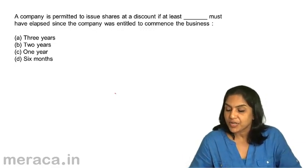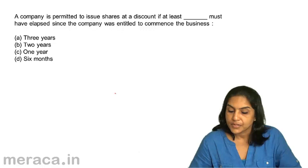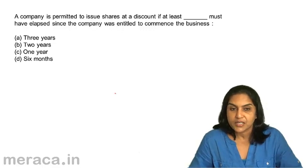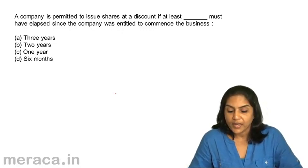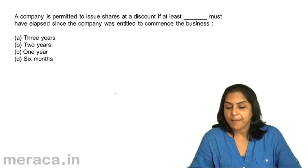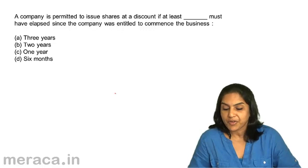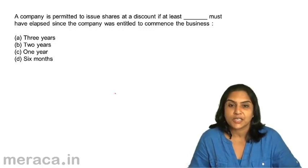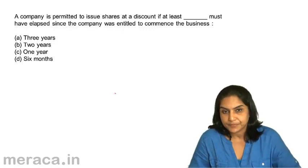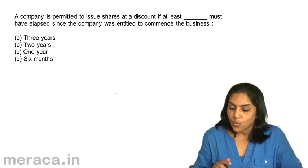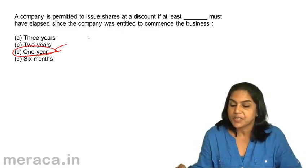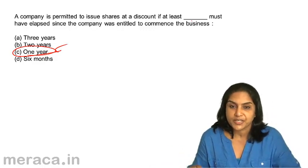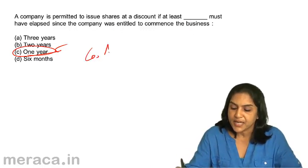A company is permitted to issue shares at a discount if at least how much time has elapsed since the company was entitled to commence business? A) Three years, B) Two years, C) One year, D) Six months. As per the Companies Act 1956, one year must have elapsed since the company began business before it can issue shares at a discount. However, as per the Companies Act 2013, shares cannot be issued at a discount.